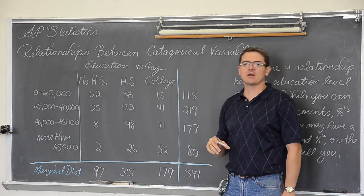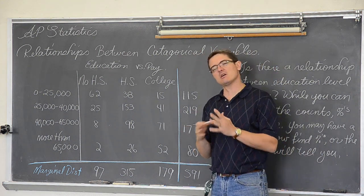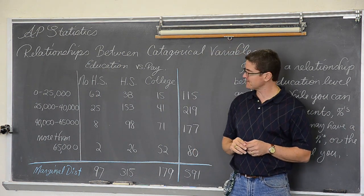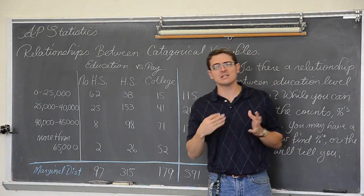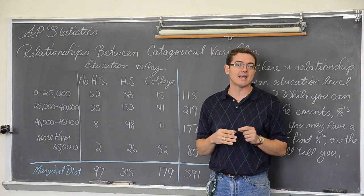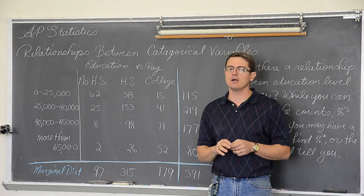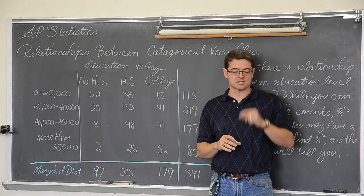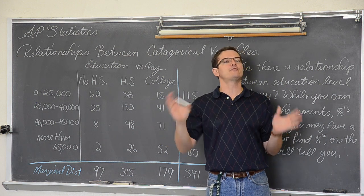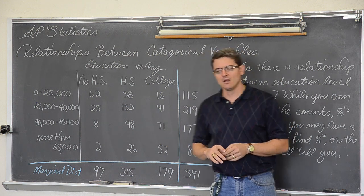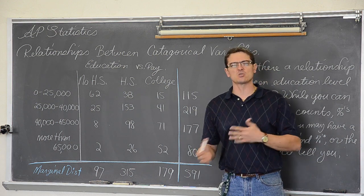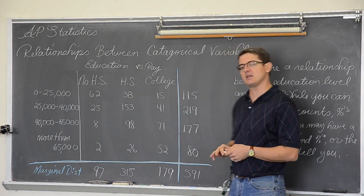In AP Statistics right now we are going to just start looking at relationships between categorical variables. Now actually testing whether or not two categorical variables are related requires something called a chi-square test and the chi-square goodness of fit test. We are very far away from that. We are just going to be looking at some two-way tables, finding some row and column percents, and just sort of discussing what patterns we see in the numbers.